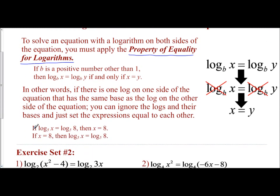If we look at this example: if we have log base 5 of x equals log base 5 of 8, we can cross out the log base 5s. There's one on the left and one on the right — they're the same exact log — and so that tells me x equals 8. It also works in both directions, which is what 'if and only if' means. If I state x equals 8, I am allowed to take the log of both sides, and this will come into play later in this logarithmic unit.